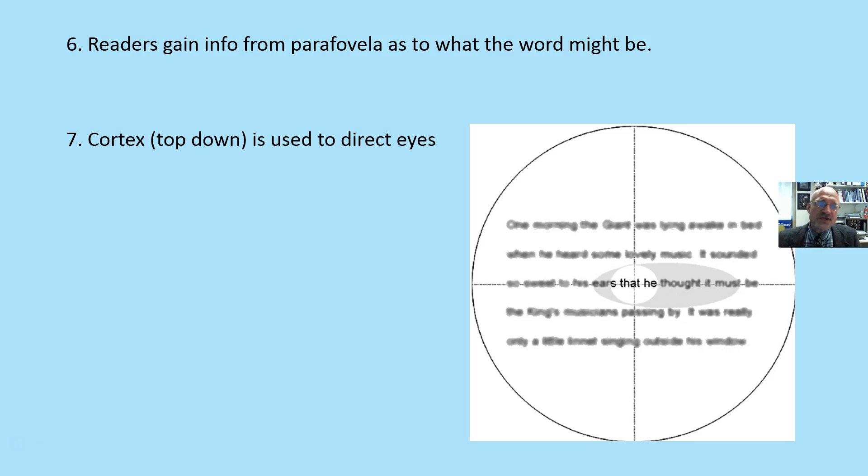The readers gain information from the parafovea as to what the word might be. You can see this nice illustration. There's the fovea. These are the words that are in focus, and we're looking slightly ahead. This is parafovea. That is blurry, but our brain is using this top-down function to predict what these words might be.